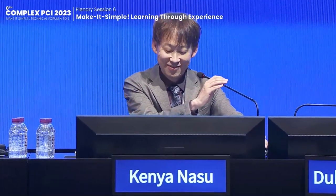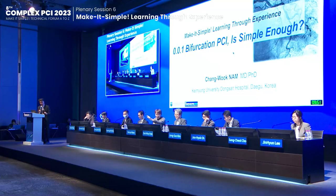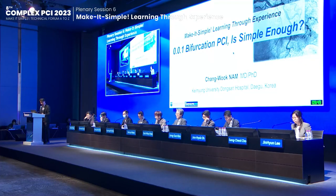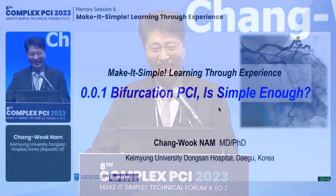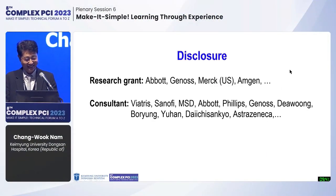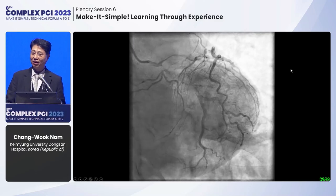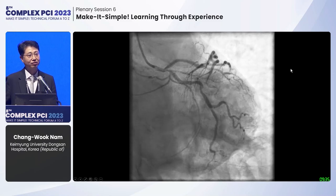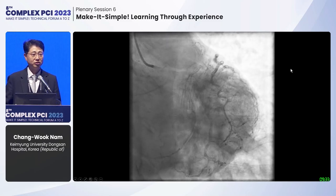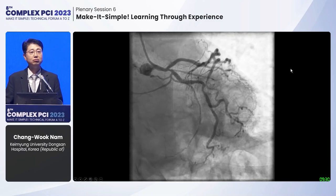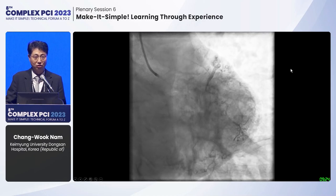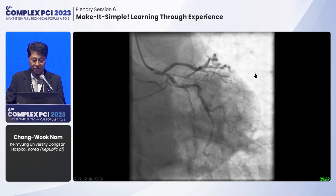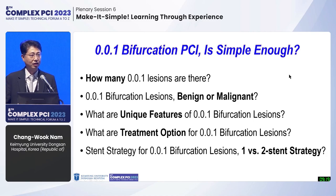Thank you, respectable chairman. It's my great honor to share my experience. I didn't know this was a case session, so unfortunately I included only one case. Today's talk is about the 0-0-1 bifurcation lesion, which is a very rare situation and one of the challenging bifurcation PCIs because we don't have enough data and there is no standard treatment strategy for bifurcation 0-0-1 lesions.